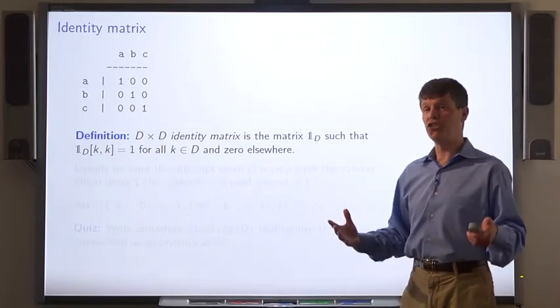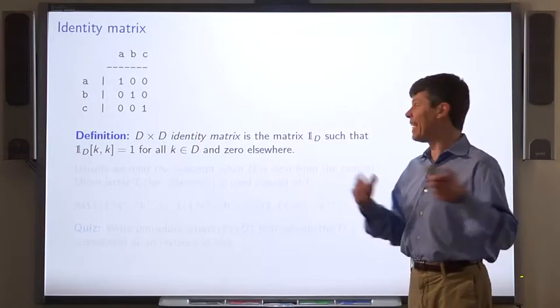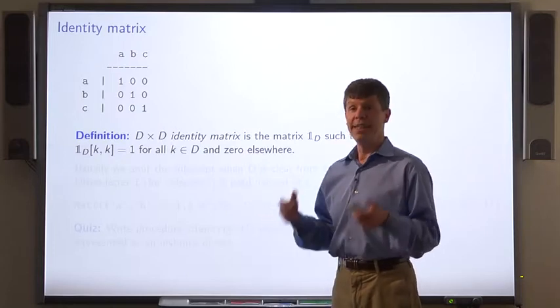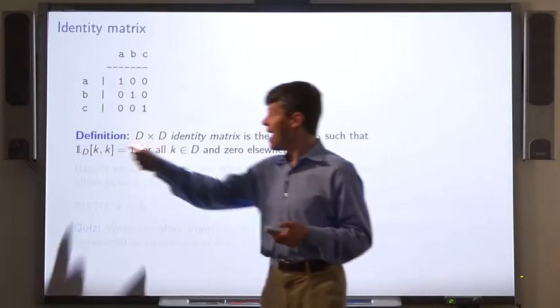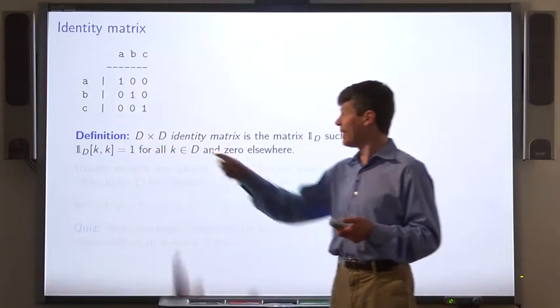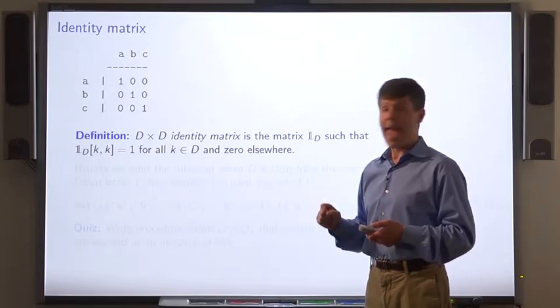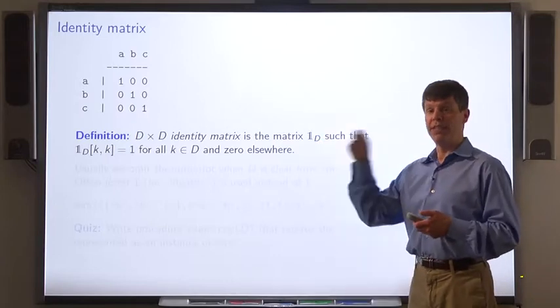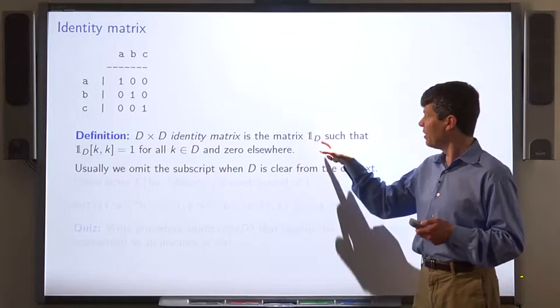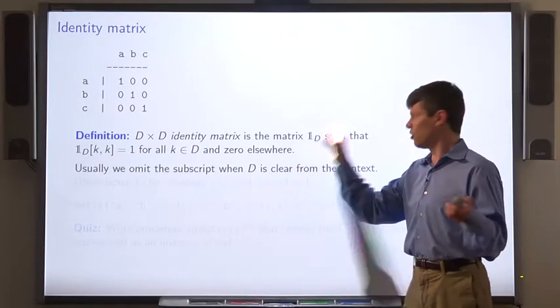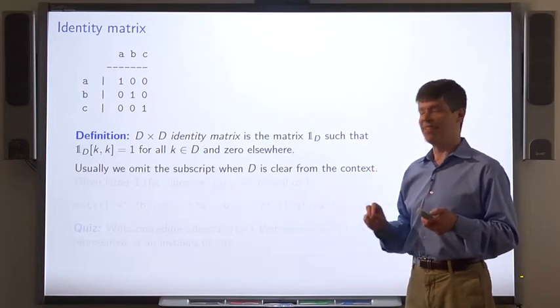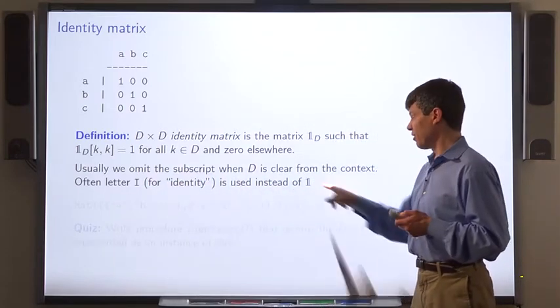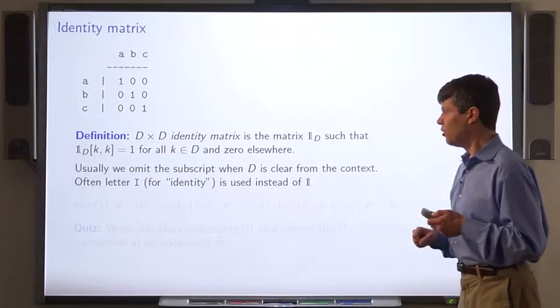To exercise our understanding of the MAT class, we'll look at the identity matrix. For a set D, the D by D identity matrix is the matrix such that the KK element is 1 for every element K of D, and all the other elements are 0. I'm going to use the numeral 1 to indicate the identity matrix with a subscript of D, but very often we'll just omit the subscript when it's clear what domain is intended. Very often, the letter I is used to represent the identity matrix instead of this numeral 1.